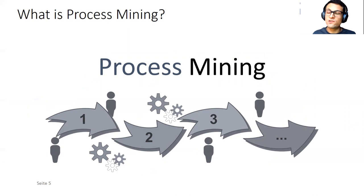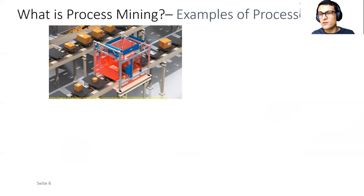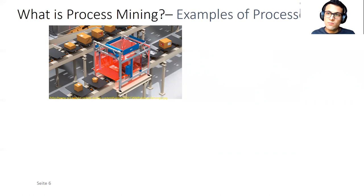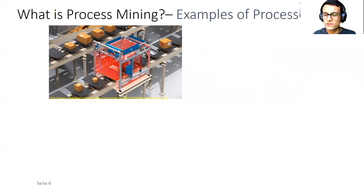Some examples of processes — collections of activities with a certain ordering among them in real life — are logistics. If I'm sending a package to a friend, I go to the postal office and hand over the package. The employee scans it, puts it in the back room, until another employee collects the package, puts it in a van, and drives to a centralized warehouse. The postal service company is executing all kinds of activities to get the package from where I delivered it to its final destination.